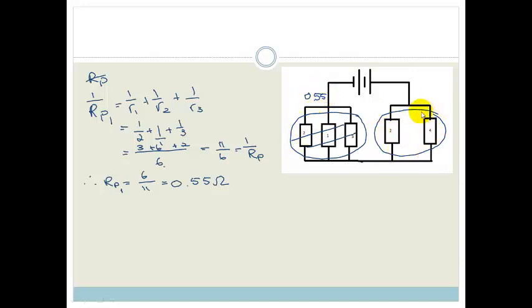Now let's look at the second part. So this we're going to call Rp2, and because there are two resistors in parallel, we can use our special equation, which says Rp is equal to R1 times R2 over R1 plus R2. So that is going to be 2 times 4 over 2 plus 4, which is 8 over 6.